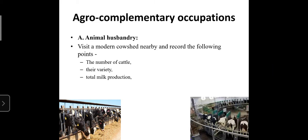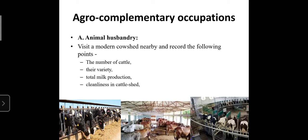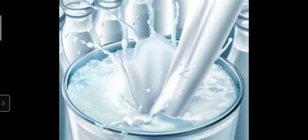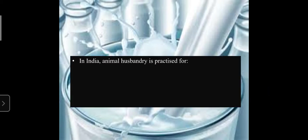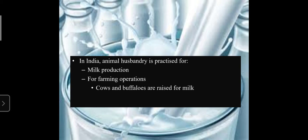Also record how the cow shed is kept clean and how the cattle's health is taken care of. In India, animal husbandry is practiced mainly for milk production and for farming operations. Cows and buffalos are raised for milk, and bulls and male buffalos are used for pulling heavy loads.